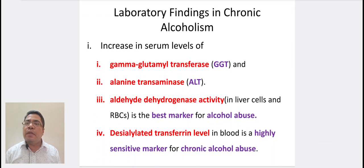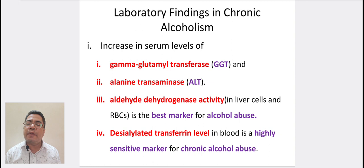Coming to laboratory findings in chronic alcoholism. Increased serum levels of gamma-glutamyl transferase, alanine transaminase, and aldehyde dehydrogenase activity — which is the best marker for acute alcohol abuse — and desialylated transferrin activity in blood is a highly sensitive marker for chronic alcohol abuse.